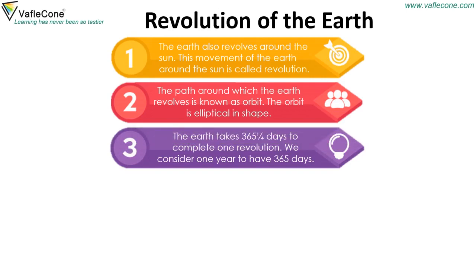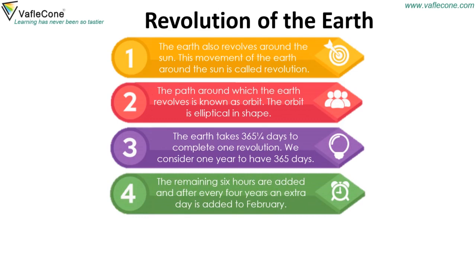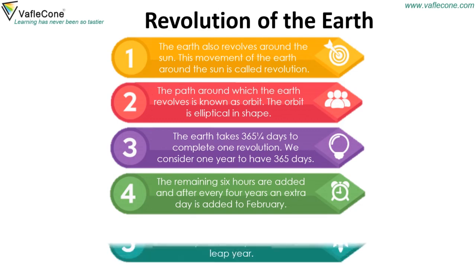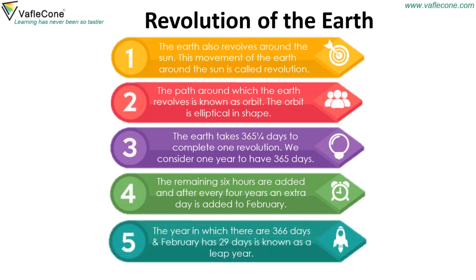The Earth takes 365 and one-fourth days to complete one revolution. We consider one year to have 365 days. The remaining 6 hours are added, and after every 4 years, an extra day is added to February. The year in which there are 366 days and February has 29 days is known as a leap year.